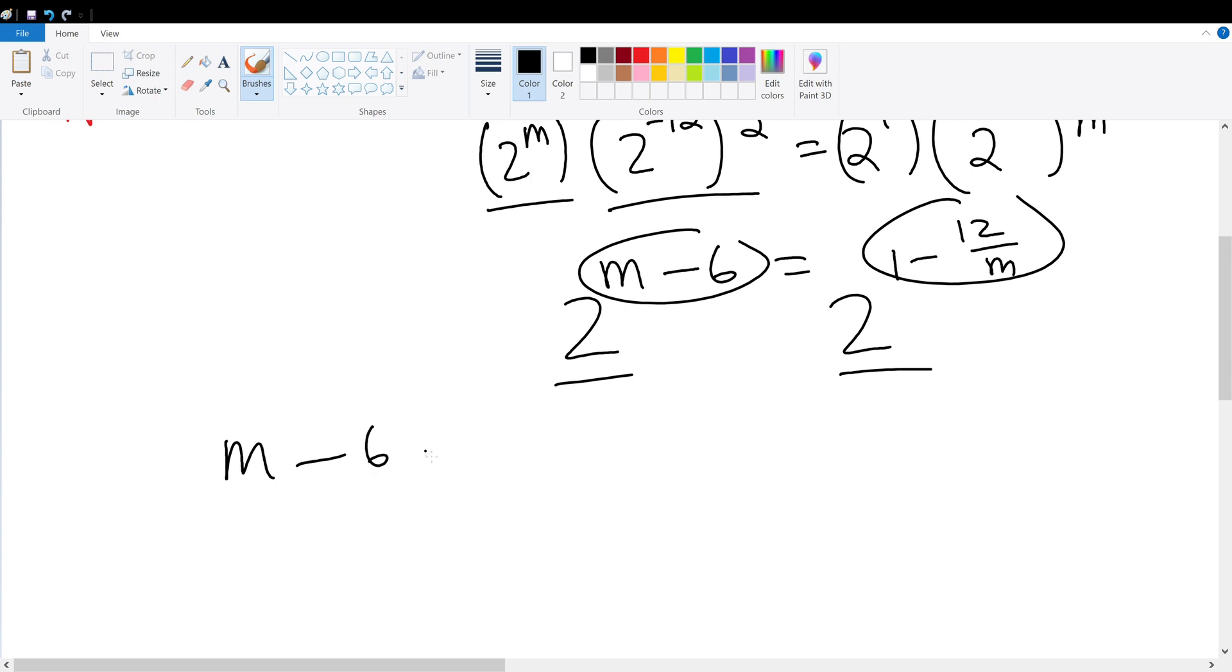So m minus 6 is equal to m minus 12 over m after simplification. Cross multiply m squared minus 6m then move it over minus m plus 12 must give 0. So m squared minus 7m plus 12 is equal to 0.